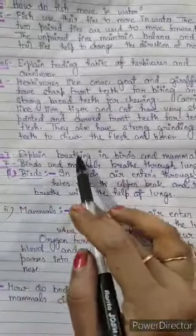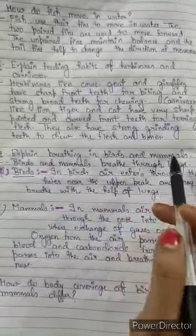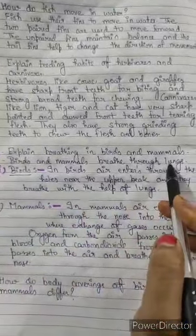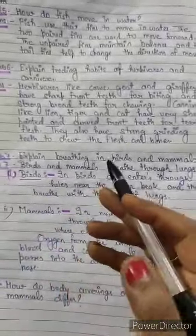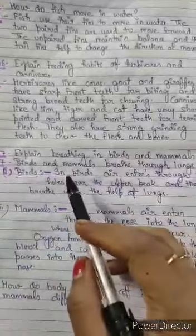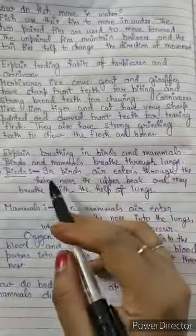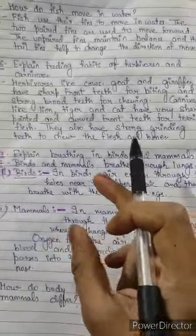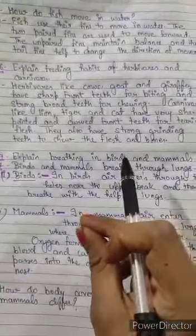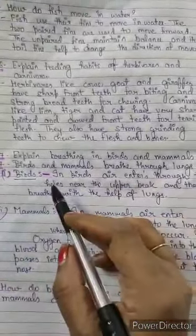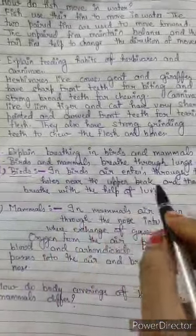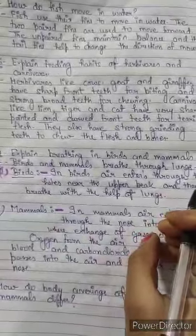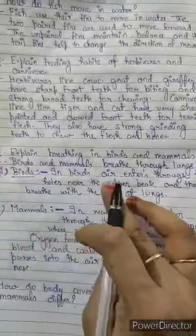Question 7: Explain breathing in birds and mammals. Birds and mammals both breathe through lungs. In birds, air enters through holes near the upper beak. Near the upper beak there is a hole through which air enters the body, and then the lungs perform the breathing process — absorbing oxygen from the air and releasing carbon dioxide.